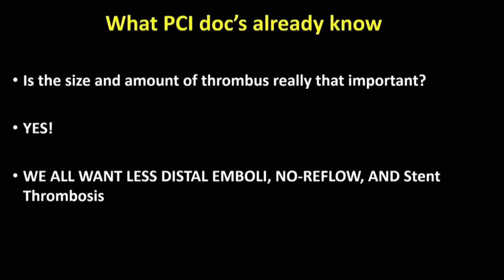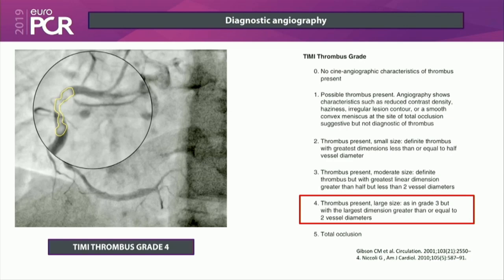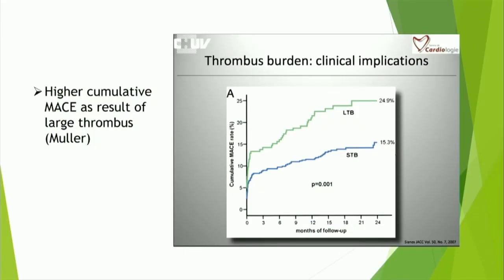So is the size of thrombus really important? The answer is yes. It's important to understand the thrombus grade. The grading is: 0 is no angiographic thrombus, 1 is possible, 2 is thrombus present, 3 is moderate size, 4 is large, and 5 is total occlusion. There are total occlusions you dilate and there's very little thrombus — that's one challenge in defining this for clinical trials. But when you look at large thrombus being grade 4 and 5, cumulative MACE from every single trial shows worse outcomes with large thrombus.